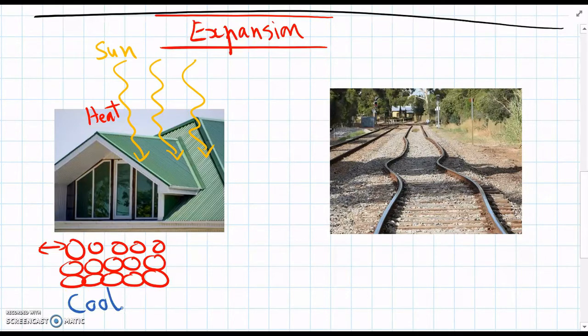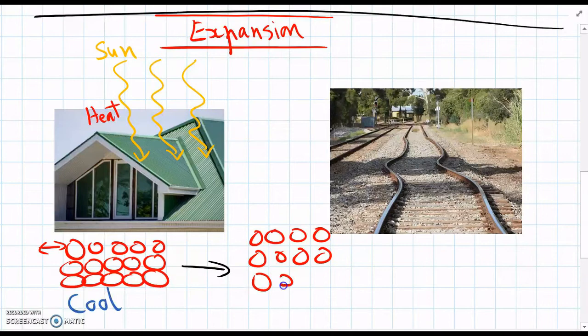So when we had a cool roof to start with, the particles are arranged neatly and they're not moving too much. But when they heat up a little bit, because they're vibrating back and forwards, they take up more space because they're pushing into each other and bumping.